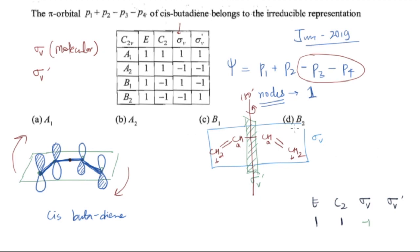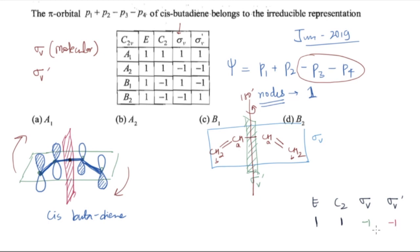For σv dash — the plane perpendicular to the molecular plane — this carbon is reflected by that carbon in this plane. You can see that this lobe is positive but its reflection gives a negative lobe; similarly negative and negative. So around σv dash the molecule is not symmetrical, giving −1. So the characters are: 1, 1, −1, −1. Looking at the C2V character table, 1, 1, −1, −1 corresponds to A2. So the correct answer for this question is A2.